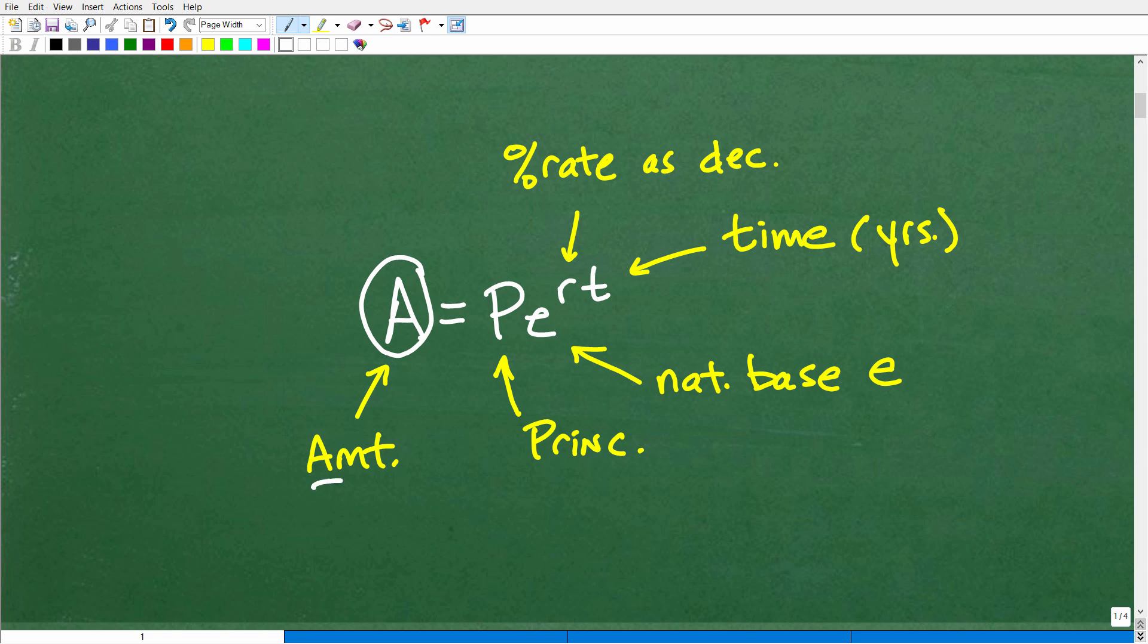Okay, so A is the amount that we're going to get after we put in a certain principal. Okay, so just think of a bank here. Here's a little bank we're going to deposit in a principal amount. That's our starting amount. Now, what we get in terms of our return on our investment is this A value.